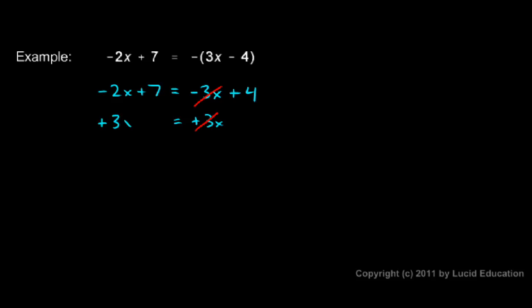Whatever I do to one side I do to the other. So on the left I have negative 2x plus 3x which is 1x. And I still have my plus 7. And on the right I have a 4. So x plus 7 equals 4.